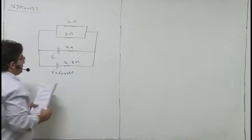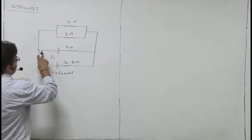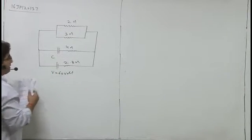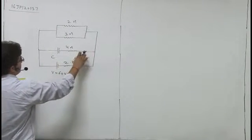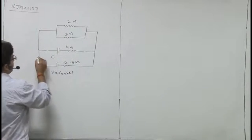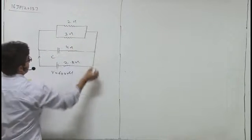So at steady state, is branch mein koye current nei jaye ga capacitor wali mein. Jo bhi current flow karay ga wo yahan se flow karay ga. At steady state hum is ko aise mahan sakte hain yeh open ho gaya. To current pura is mein flow karay ga yahan se vaapas load dega.